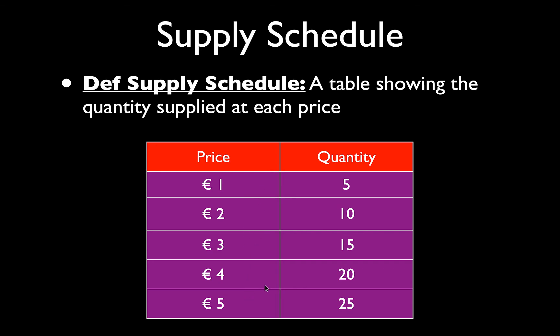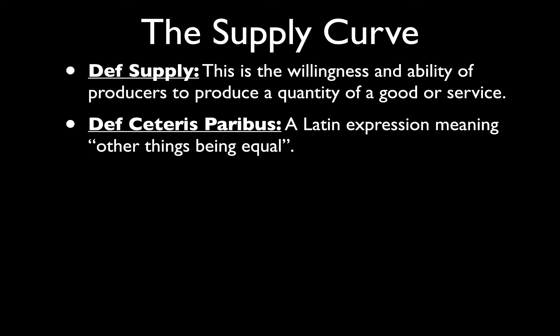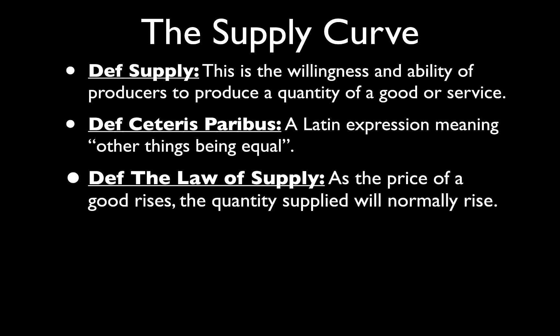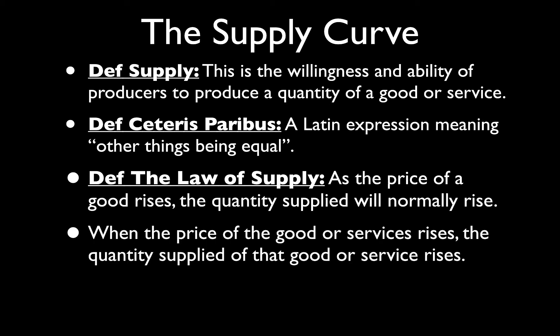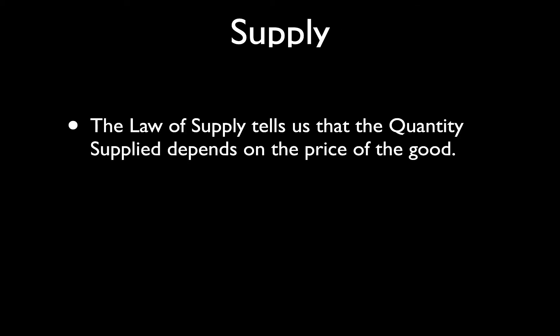As the price rises, quantity supplied increases, and as the price falls, quantity supplied is also reduced. Supply is the willingness and ability of producers to produce a quantity of a good or service. Ceteris paribus is a Latin expression meaning 'other things being equal.' The law of supply states: as the price of a good rises, the quantity supplied will normally rise, and when the price falls, quantity supplied falls.